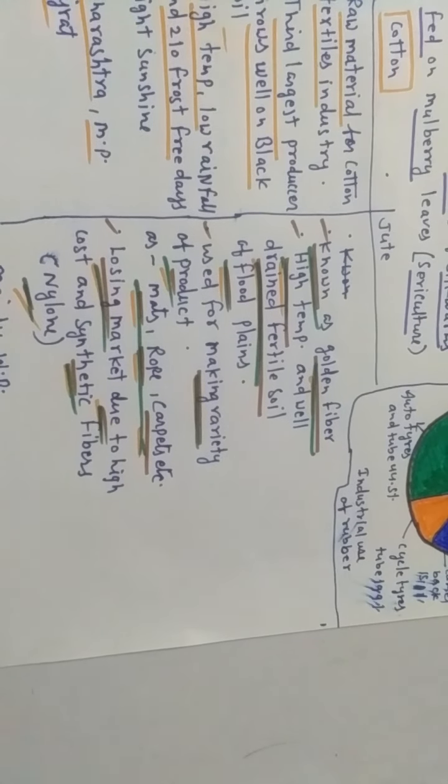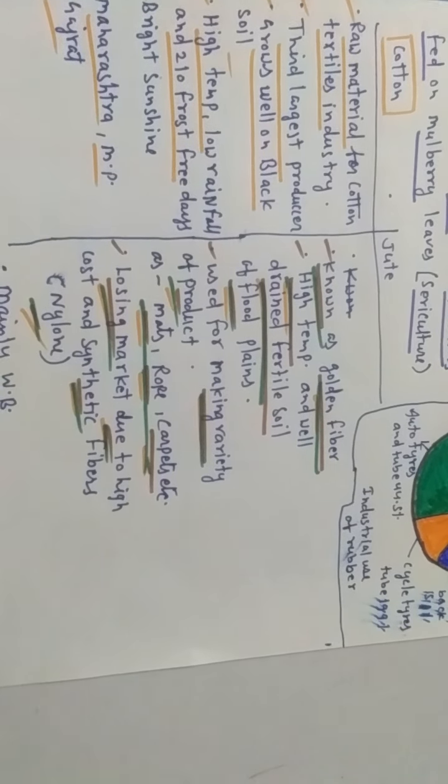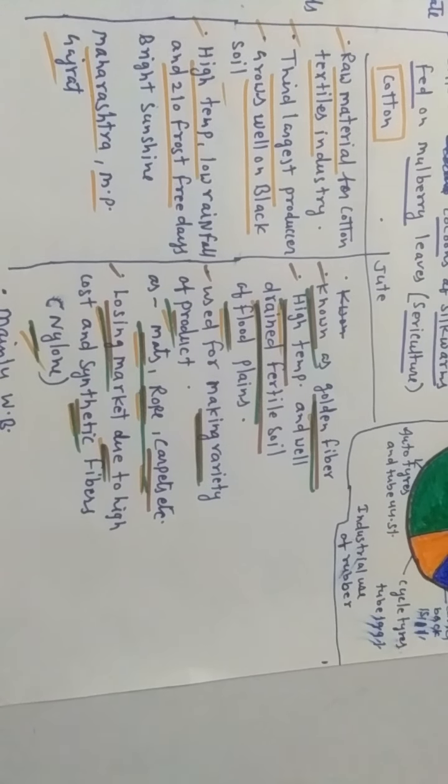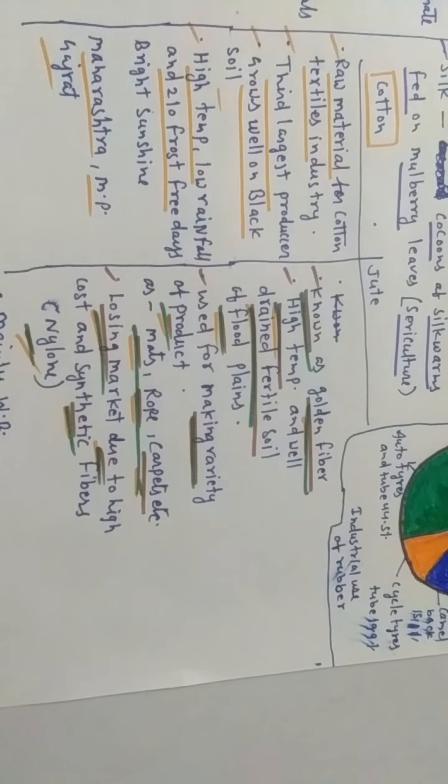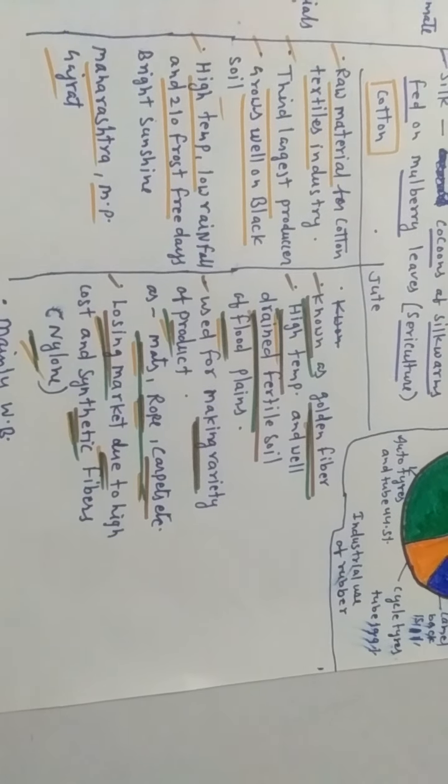Jute is called the golden fiber. It requires high temperature and well-drained fertile soil of flood plains. In the delta region where Ganga and Brahmaputra rivers join together, they make the delta, and this soil becomes more and more fertile for the production of jute.